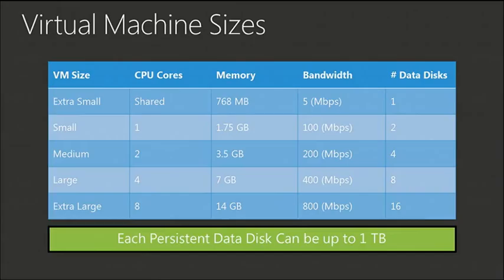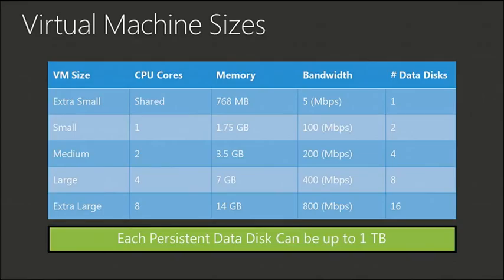We also wanted to support big-scale applications with a lot of data. Here are the VM sizes we've got today — everything from the shared-core extra-small all the way to the extra-large eight-core machine. The number of data disks you can attach depends on the VM size, all the way up to 16. The largest size of a page blob in Windows Azure Storage is one terabyte, so you can add up to 16 one-terabyte disks to a virtual machine.